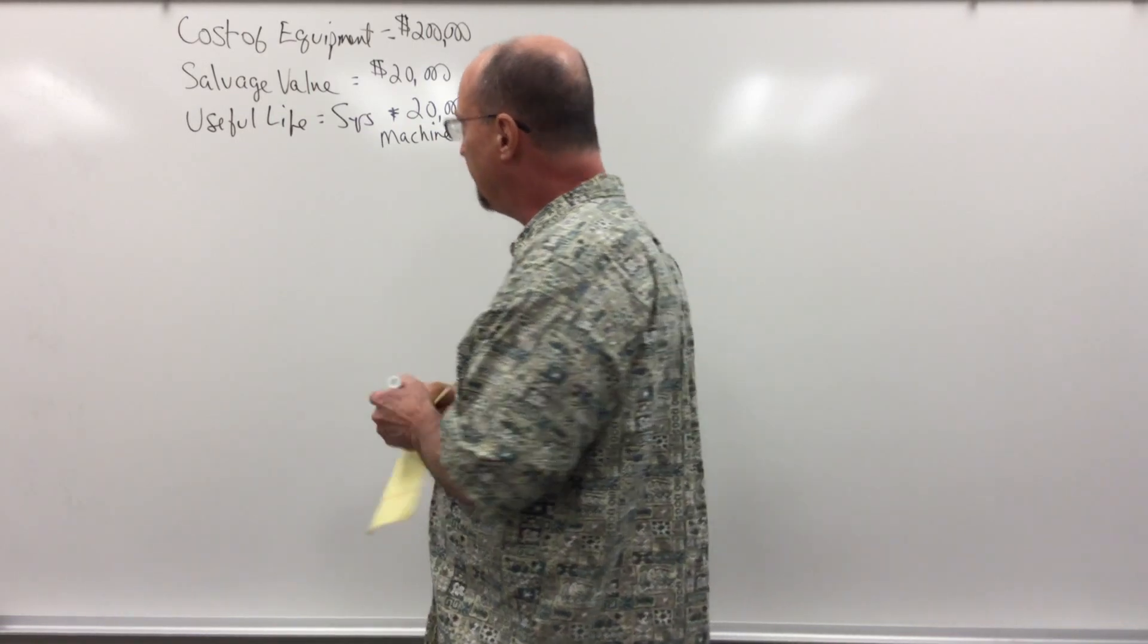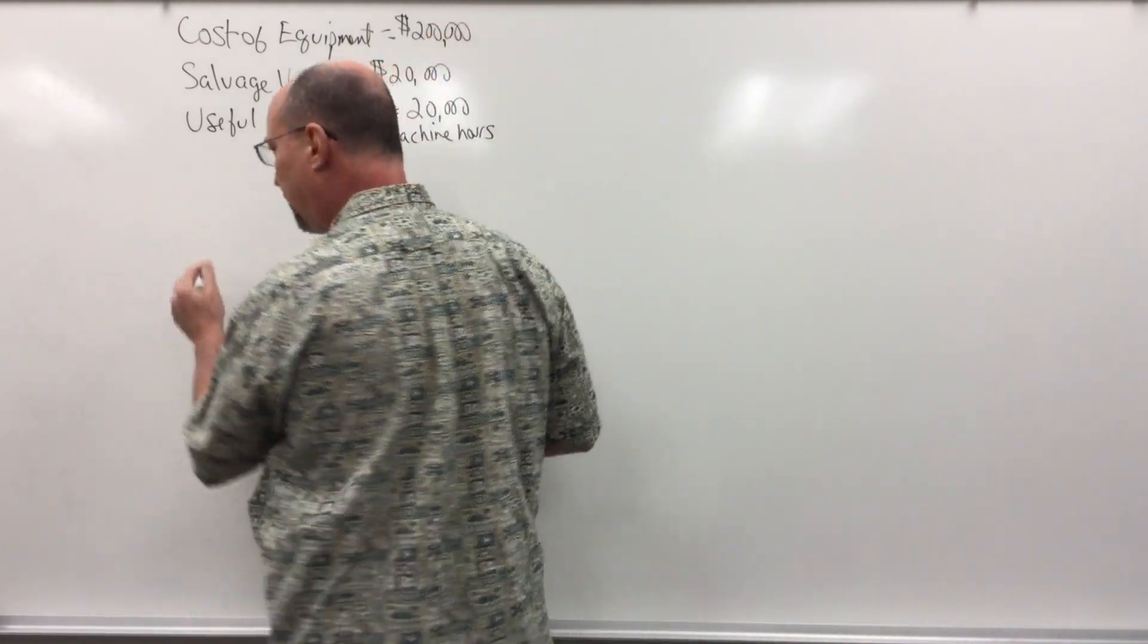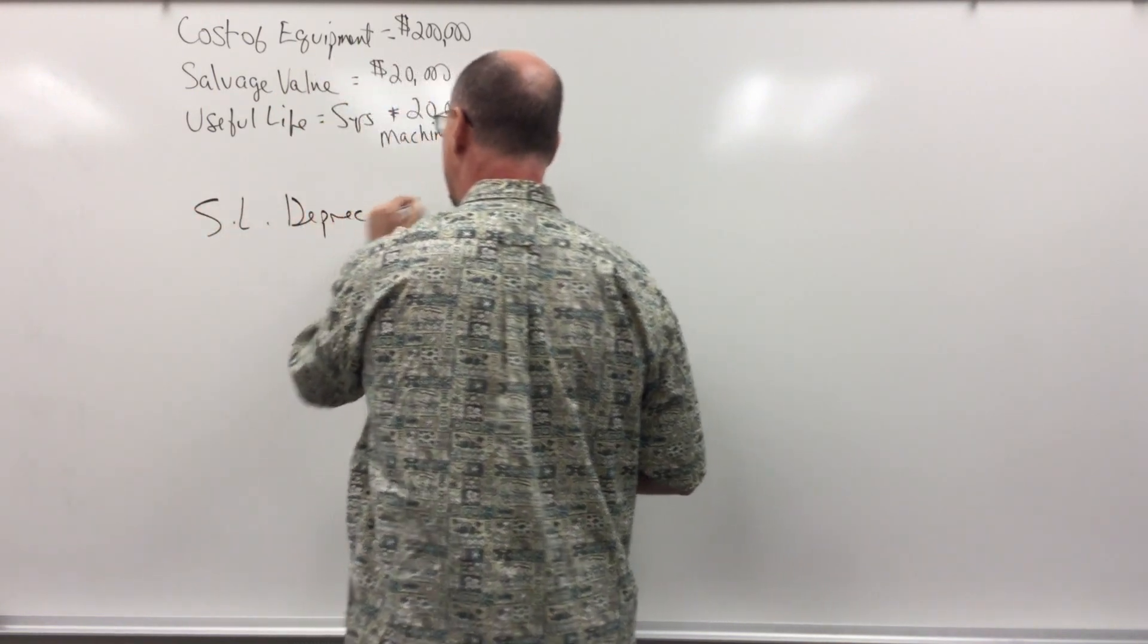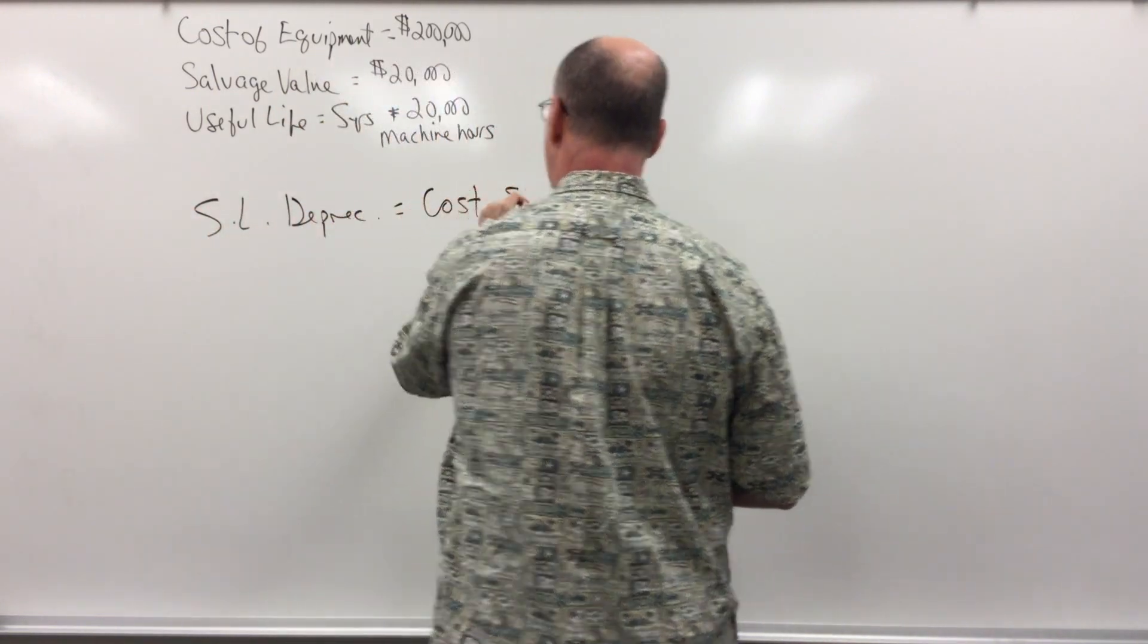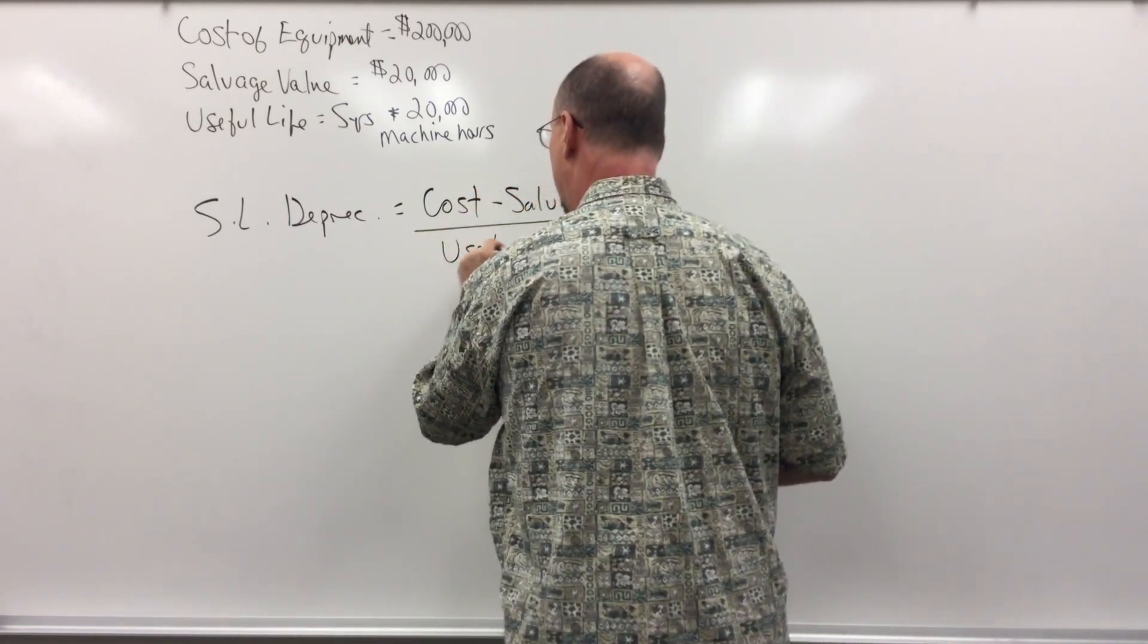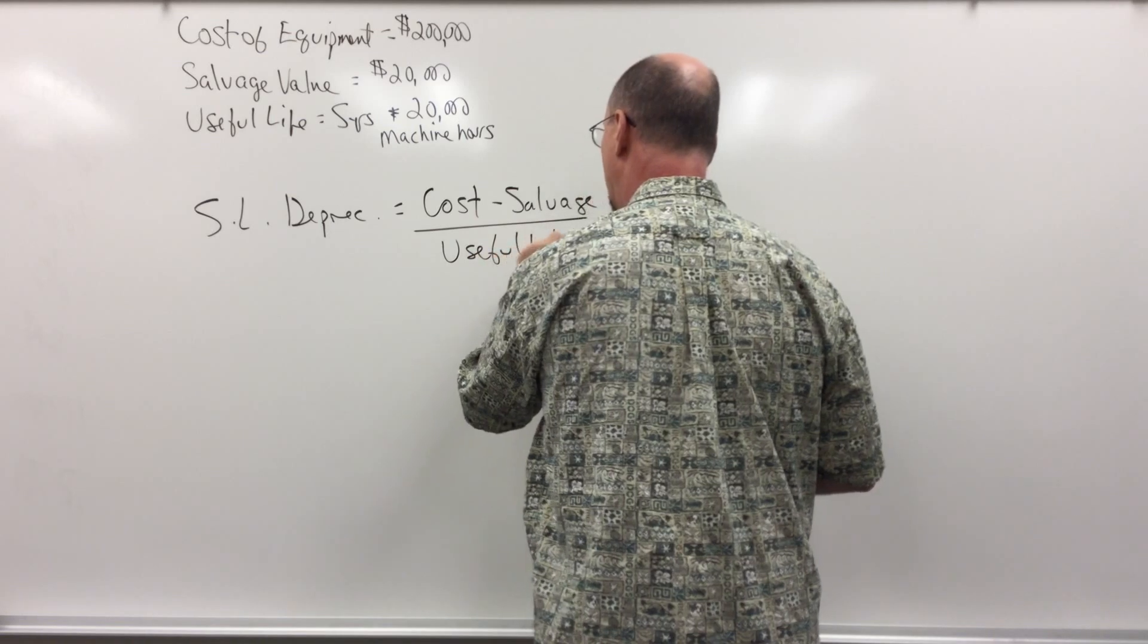So the formula for straight-line depreciation is cost minus salvage value divided by the useful life.